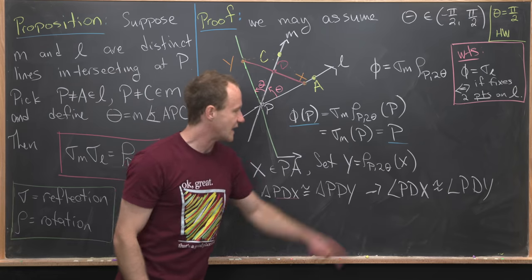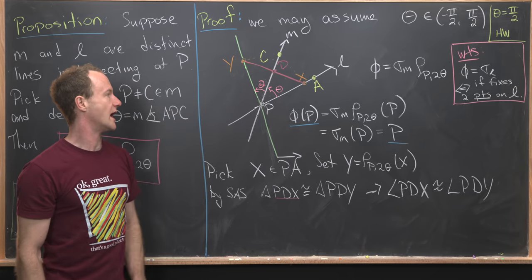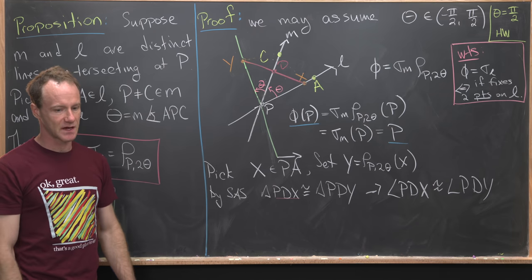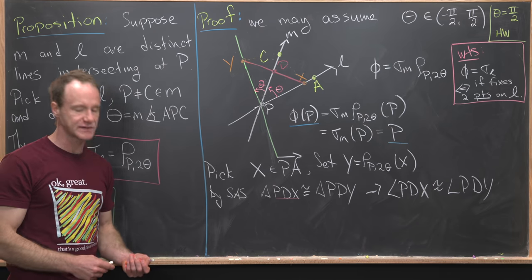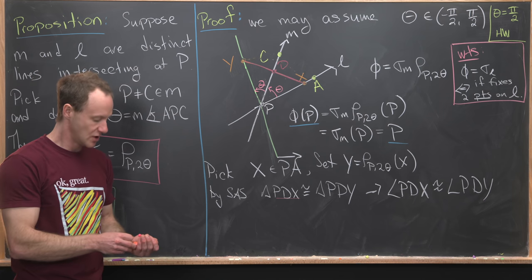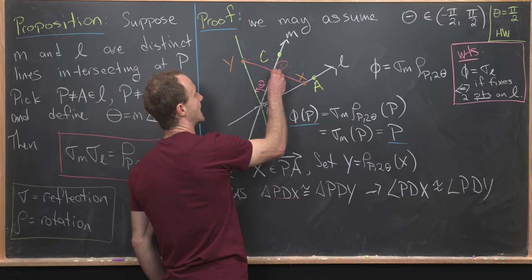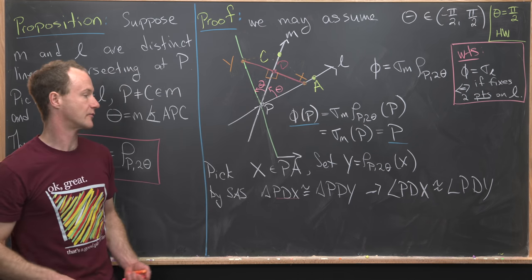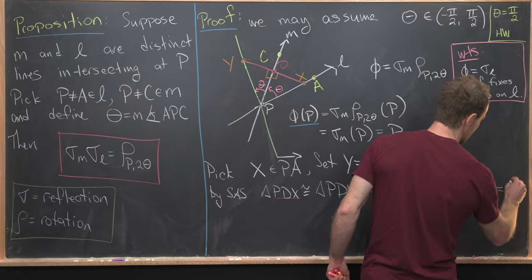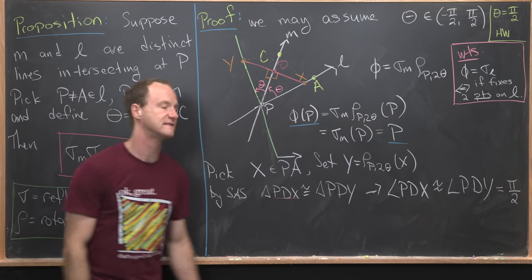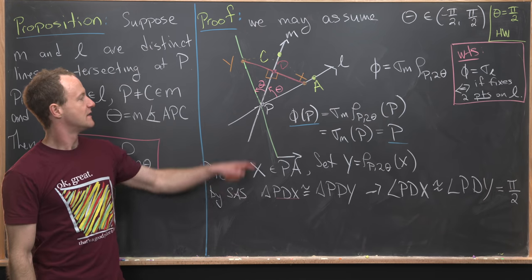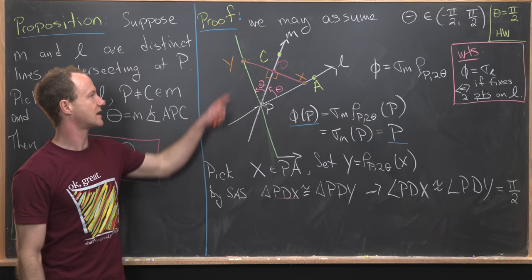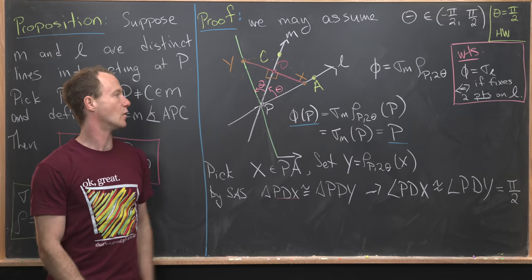Now that we've got this angle PDX is equal to angle PDY, that's this angle and this angle. And their sum is 180 degrees or pi radians. We see that that makes each of them a right angle. So we've got a right angle here, and we have a right angle there. But that means they both have measure angle pi over two or 90 degrees. But what does that do? That means that this line M is the perpendicular bisector of XY.